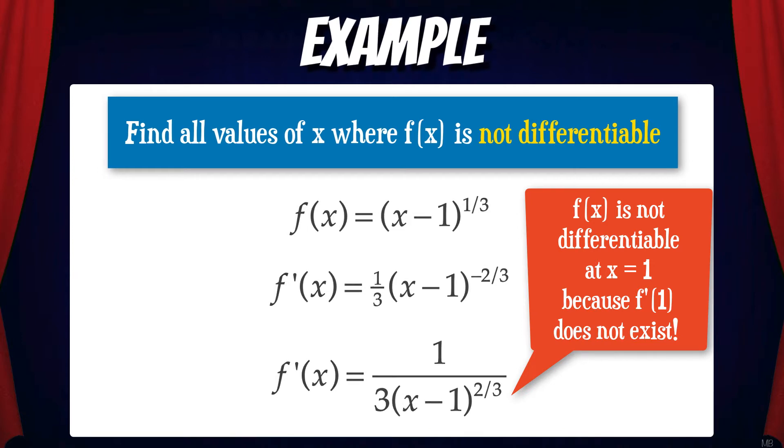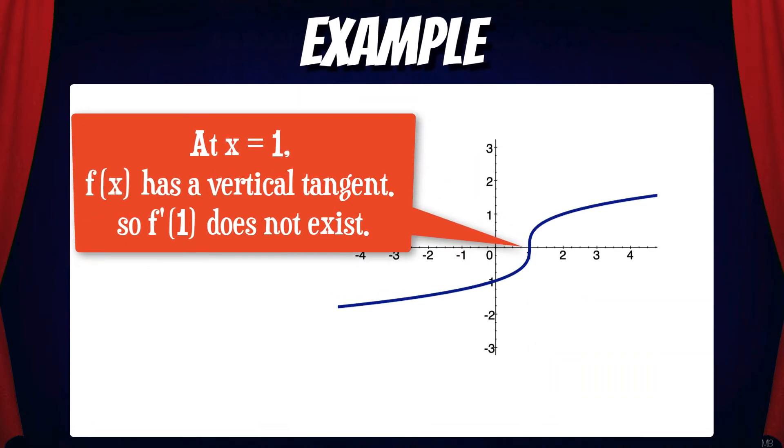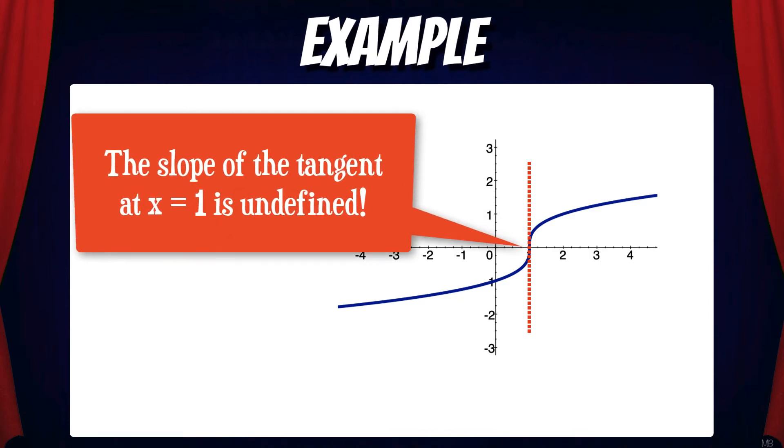Here's a graph of f of x. At x equals one, f of x has a vertical tangent. So we can see graphically that f prime of one does not exist, because the slope of the tangent at x equals one is undefined.